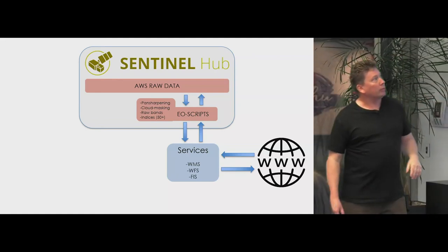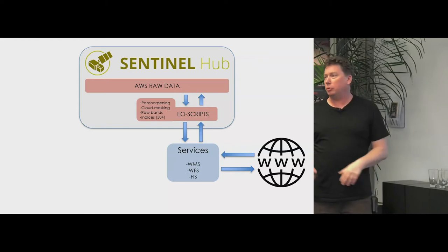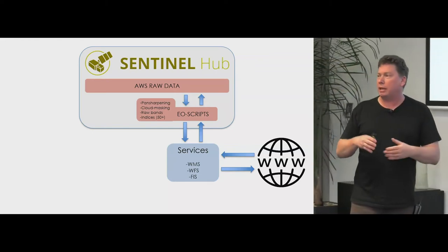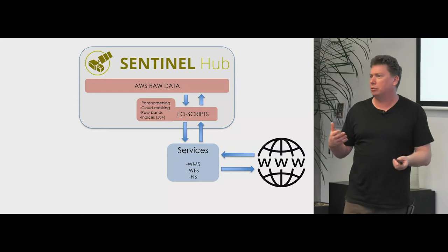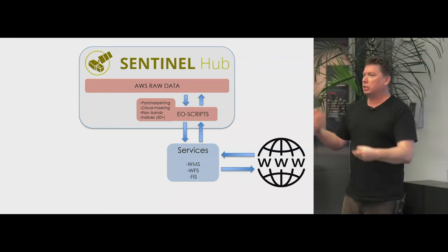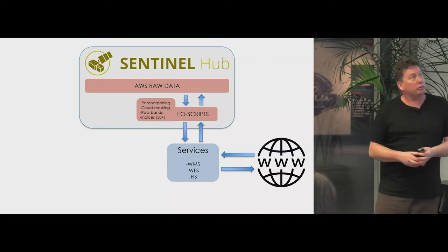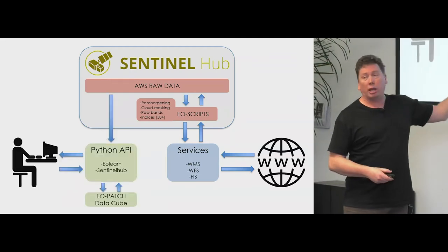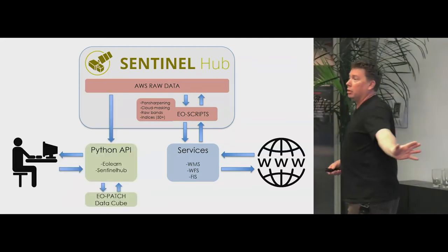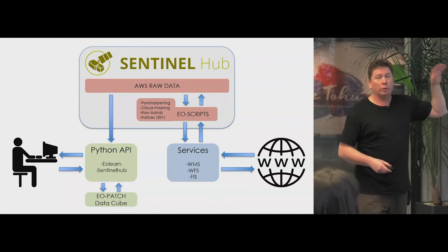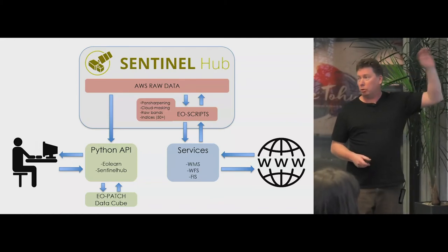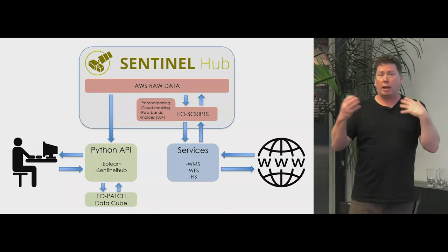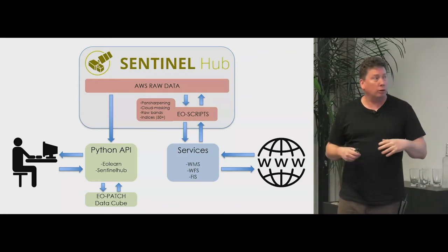Especially when we can do indices, we can just code as many as we want — in the back end I think we have 50-something indices, because you can just keep programming them and they're just a pair of services. The other cool thing with Sentinel Hub is it also has a full Python API, so we can do machine learning, build our own data cubes, which gives us a lot of power to do stuff in-house and on the desktop.